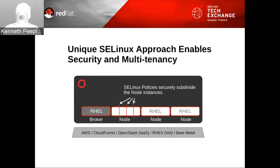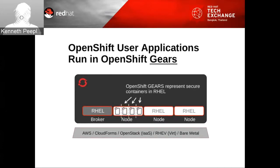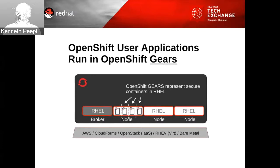One of the powerful capabilities of OpenShift is the use of Security-Enhanced Linux, where SELinux policies securely subdivide the node instances, enabling security and multi-tenancy. OpenShift user applications run in OpenShift gears. Gears represent secure containers in RHEL — a slice of the node's CPU, RAM, and storage made available to each application. An application can never use more resources than what is allocated in the gear, and multiple gear configurations are available at application setup time. Gears combine the partitioning capabilities of control groups with the security features of SELinux.